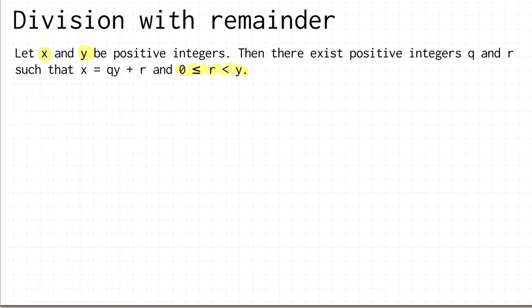Let's just see some examples of doing division with remainder. If you took x equal to 15 and y equal to 3, then you can write 15 as 5 times 3 plus 0. So this time your remainder was 0. This is the x, this is the q, this is the y, and this was the remainder. That's what happens if the division works exactly.